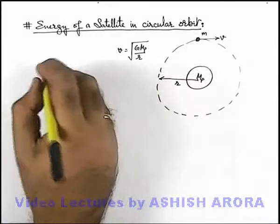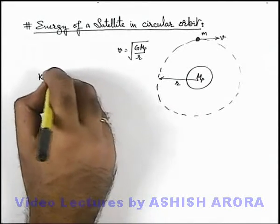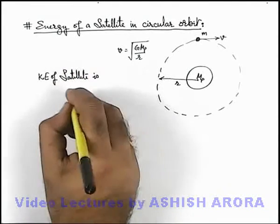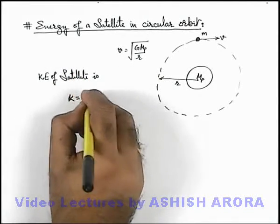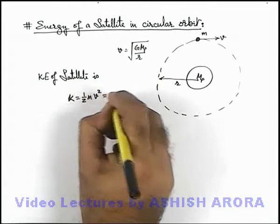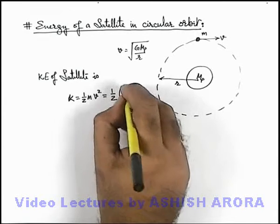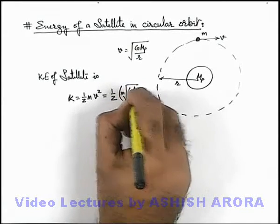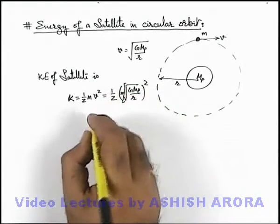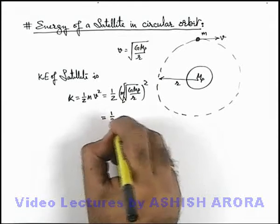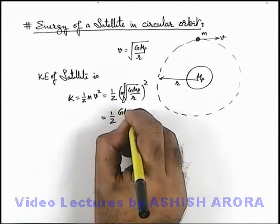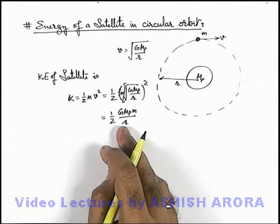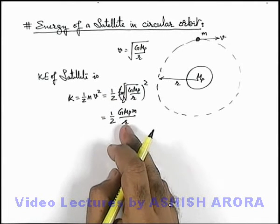If we calculate the energy of the satellite, we can write the kinetic energy as KE = ½mv². Substituting the value of speed, we get KE = ½m(√(GMp/r))². This gives us KE = ½GMpm/r. This is the kinetic energy of the satellite of mass m in an orbit of radius r.